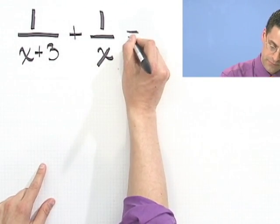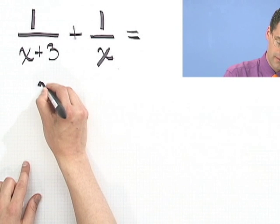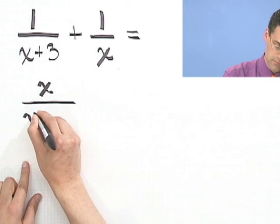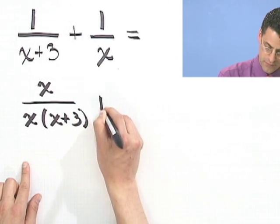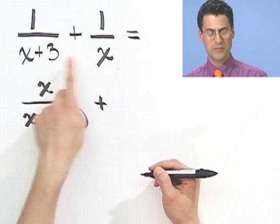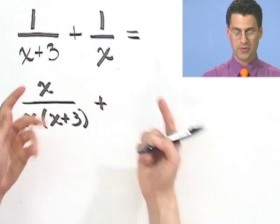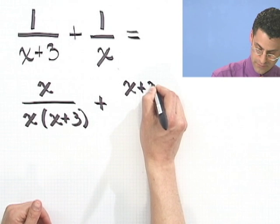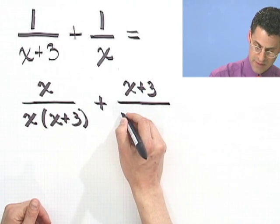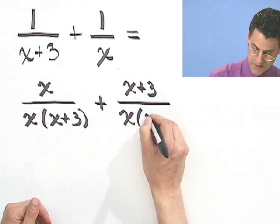So if I do that, top and bottom here I'll multiply by x, and then the top and bottom here I'm going to multiply by x plus 3, because that's the least common multiple. That's the smallest thing that they have in common. So I multiply x plus 3 on the top, and I multiply it on the bottom. And I'm using my parentheses here.